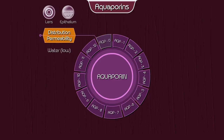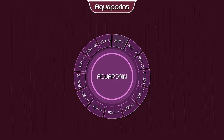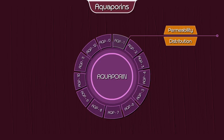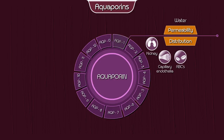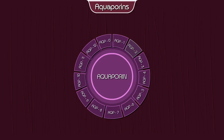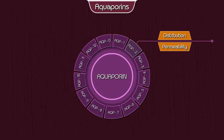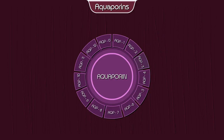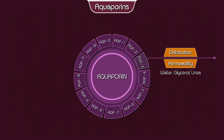Aquaporin 1 — permeability: water; distribution: kidney, capillary endothelia, red blood cells, cornea, and choroid plexus. Aquaporin 2 — permeability: water; distribution: kidney. Aquaporin 3 — permeability: water, glycerol, urea; distribution: kidney.